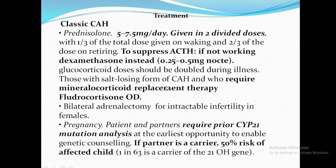In the salt-wasting form of CAH, fludrocortisone once daily is required. For intractable infertility, bilateral adrenalectomy is suggested. Patients wishing to become pregnant require CYP21 mutation analysis at the earliest opportunity for genetic counseling. If the patient is a carrier, there is a 50% chance of the child being affected, due to the high prevalence of carriers of the 21-alpha hydroxylase gene mutations in the general population — approximately 1 in 63 is a carrier.